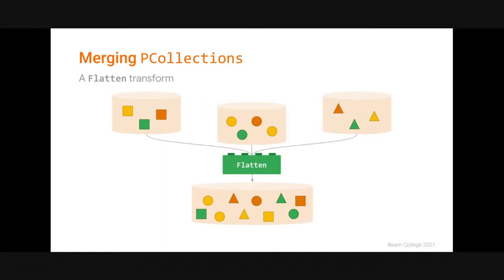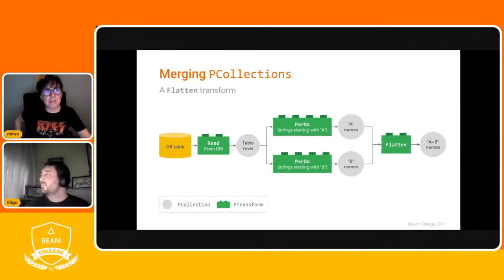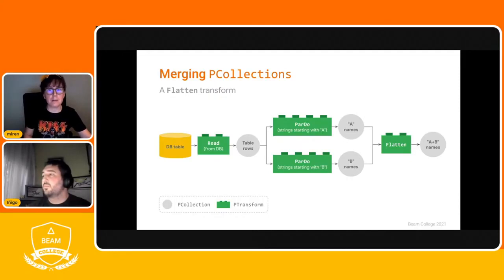For a more practical example, this is actually a continuation of the first example from today's session, where we had branched an input P-collection into two P-collections — one with names starting with A and another with names starting with B. What we can do is introduce a Flatten transform to create a P-collection that includes both the strings starting with A and the strings starting with B. Very simple.